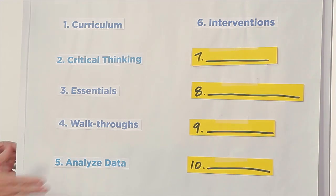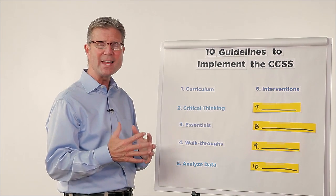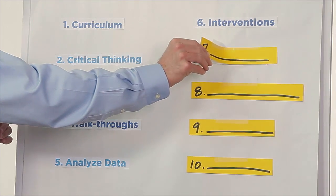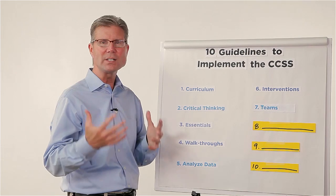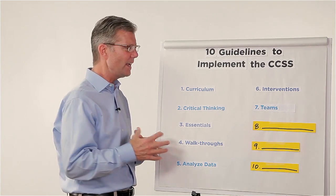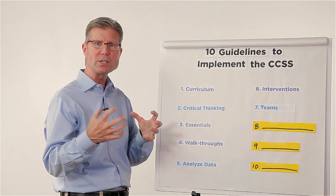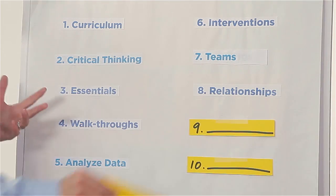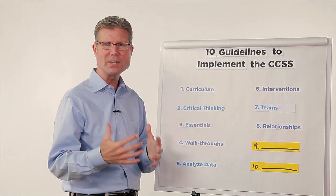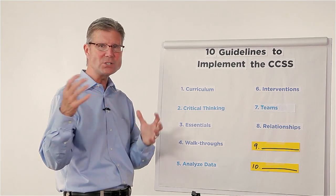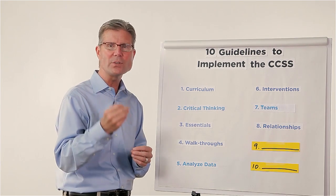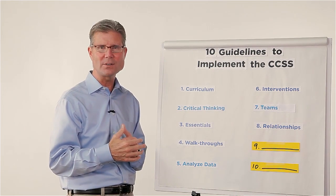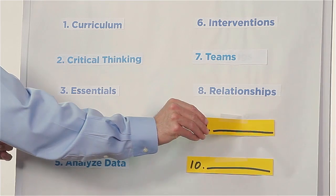Number six is interventions — what happens when the data tells us that students are falling behind or need to be supported in a different or more unique way. Interventions are critical. Number seven is teams — we know that transformation comes as part of a team activity, so building effective teams with communication and the goal of transformation is critical. Number eight is relationships — we understand we're in a relationally intensive business, and whether it's administrator to teacher, teacher to teacher, teacher to student, or student to student, all of those critical relationships help facilitate the implementation of the Common Core State Standards, so the ability to model and build those relationships is essential.